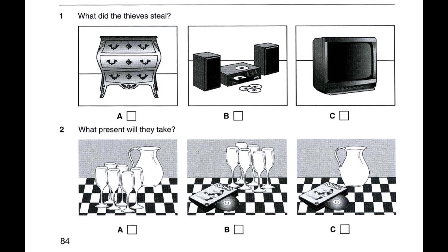Two. What present will they take? We ought to take a present if we're staying for the weekend. Let's get something a bit different. People always take flowers, and it's rather hot for chocolates. What about something for the children, like a DVD? Or some unbreakable glasses they can all use outside or on picnics? Good idea. And let's get a jug to go with them. The children have probably got lots of DVDs.